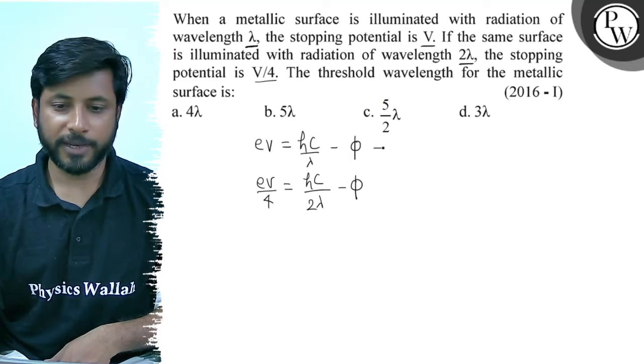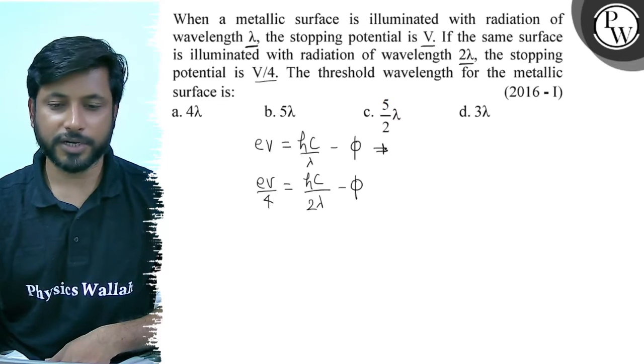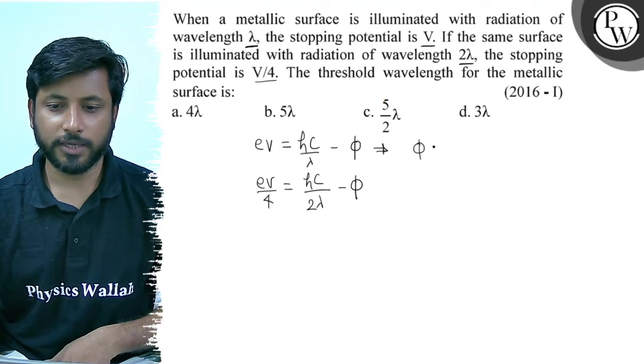Now, let's rewrite the first equation again. It comes from eV equals to hc by lambda minus phi.